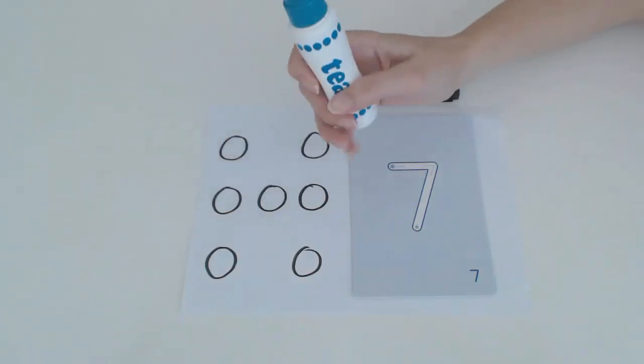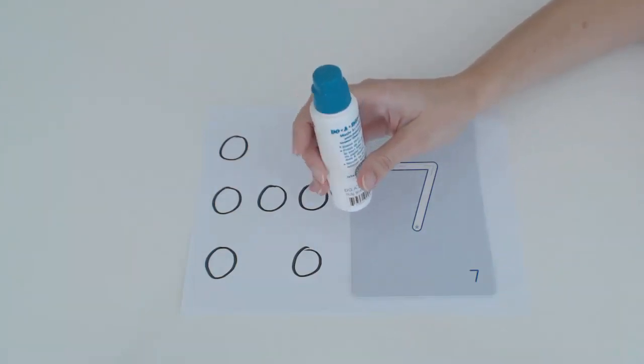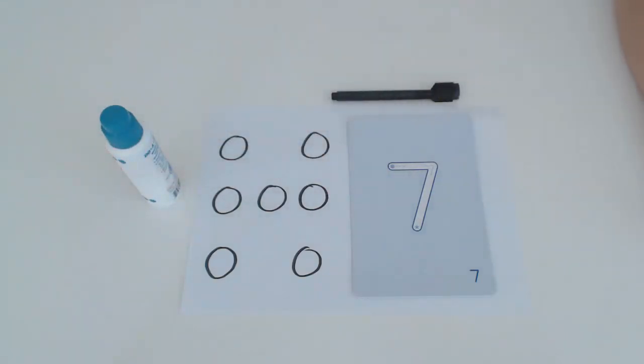What I have to fill in the dots is this Do a Dot Art. You can use one color or many colors, it doesn't matter. So what I would get my child to do first is trace the number on the flashcard.